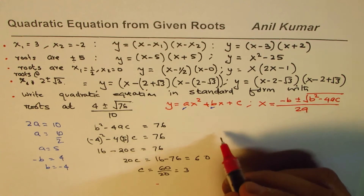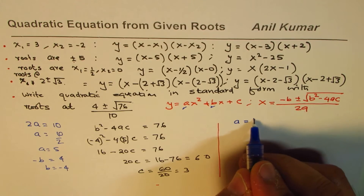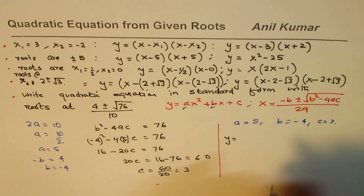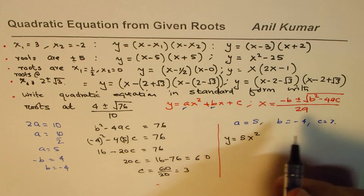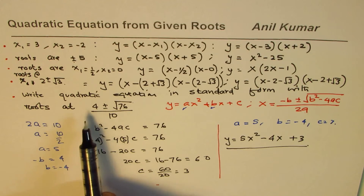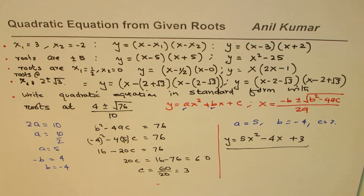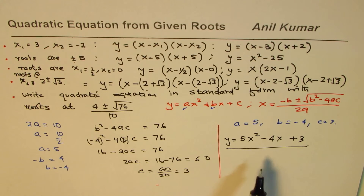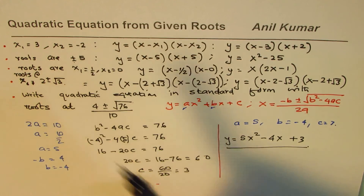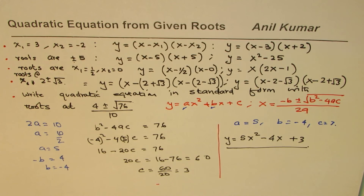So we have a equals 5, b equals minus 4, and c equals 3. Therefore the equation is y equals 5x squared minus 4x plus 3. This is the quadratic equation whose roots are 4 plus or minus square root of 76 over 10. This is an alternate method and it's extremely useful — we could apply it to any of the previous questions as well. I'm Anil Kumar, I hope that helps, thank you and all the best.